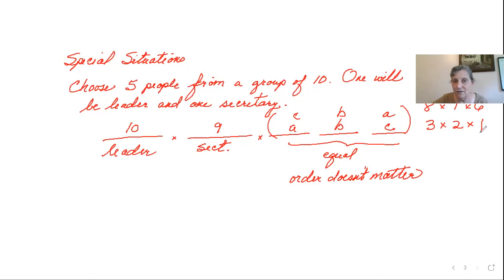These six will all be the same. So we're actually going to divide this eight times seven times six, we're going to divide this by the six. Because all three of these, the A, B, C, the C, B, A, the B, C, A, the B, A, C.